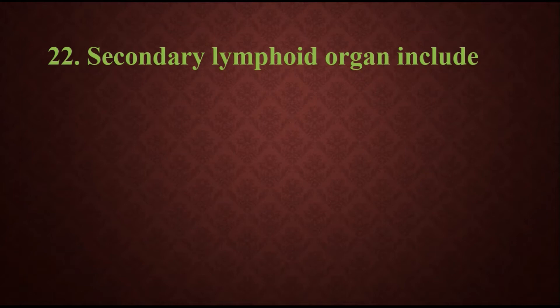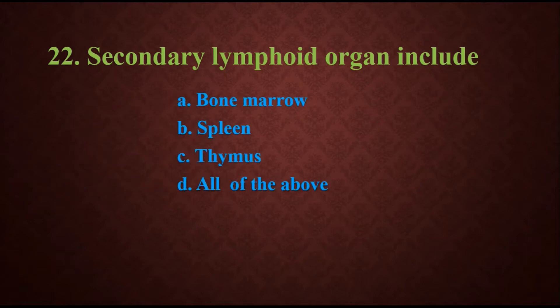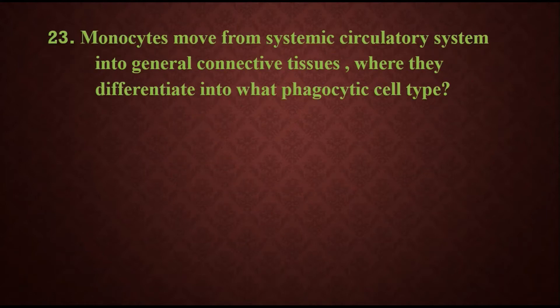Question 22: Secondary lymphoid organs include — options are: A) bone marrow, B) spleen, C) thymus, D) all of the above. The answer will be B) spleen, because bone marrow and thymus are the primary lymphoid organs.